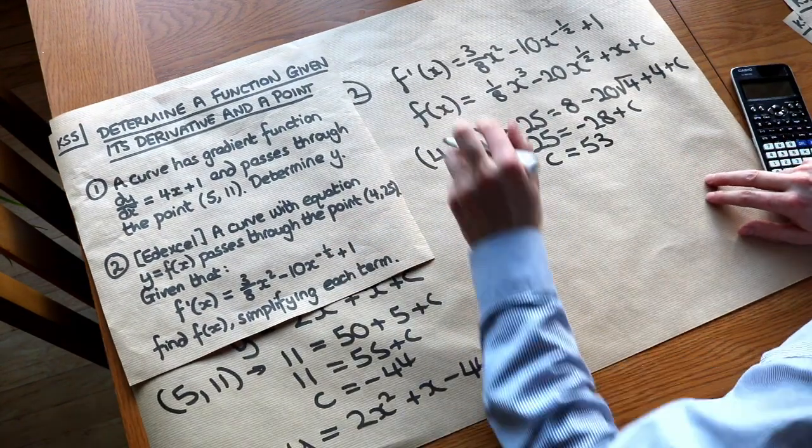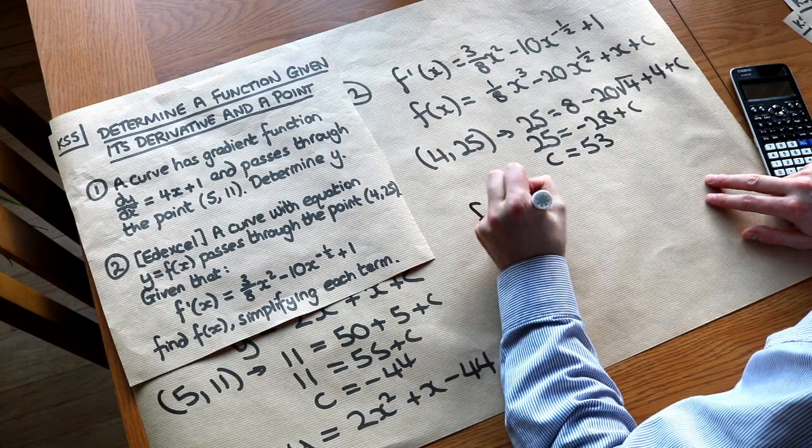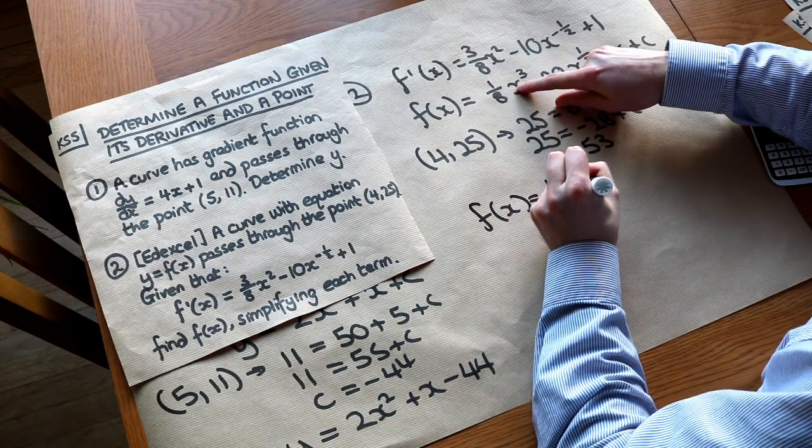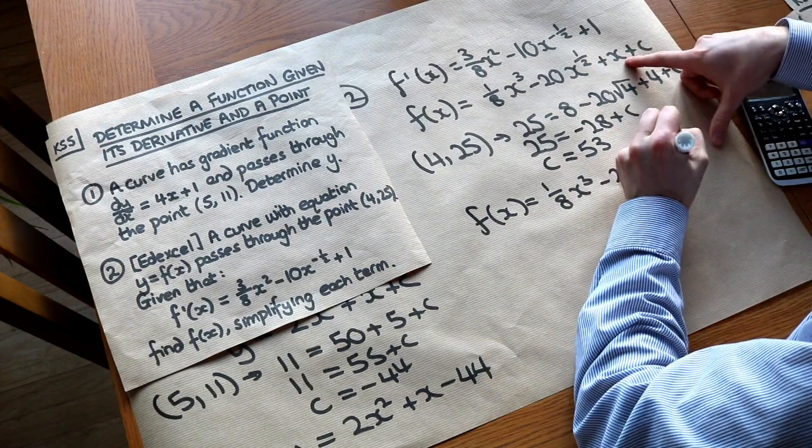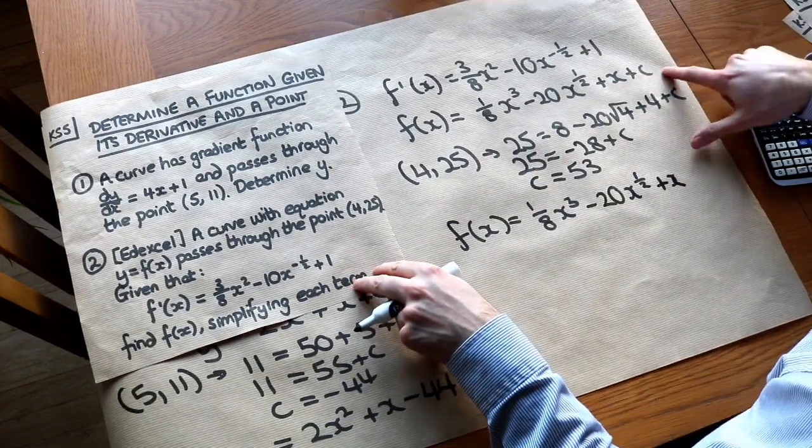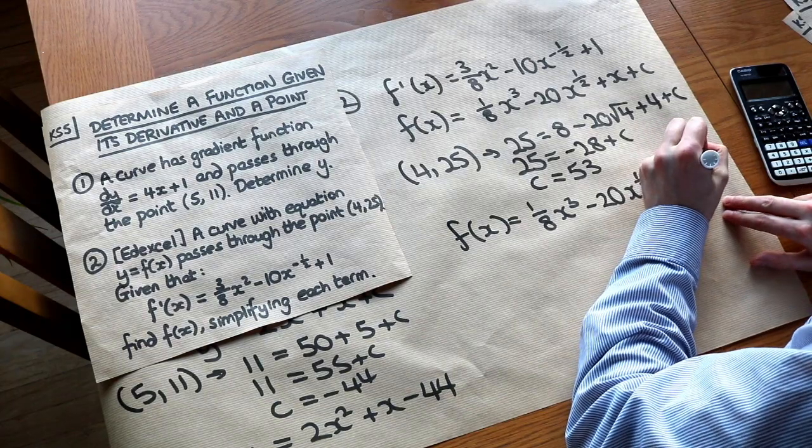So there we go. We've got the original equation. We've got f(x) = 1/8·x³ - 20x^(1/2) + x and plus the c, which we worked out was 53.